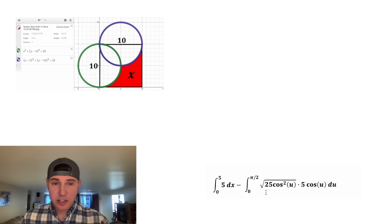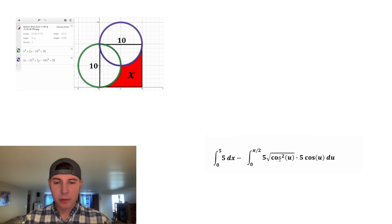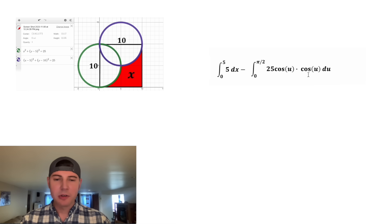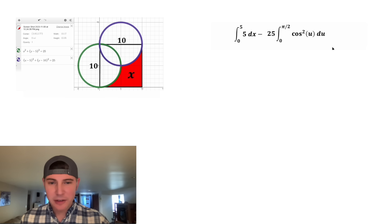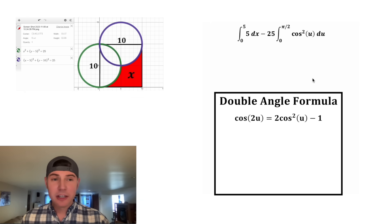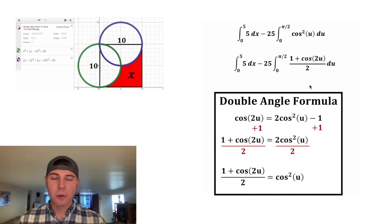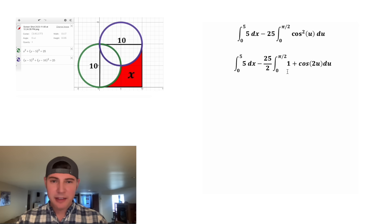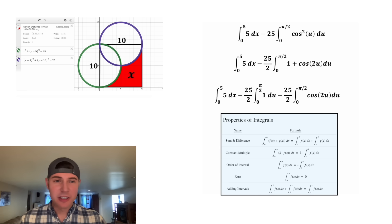Combining everything: the square root of 25 cosine squared u splits into two square roots — the square root of 25 is 5, and the square root of cosine squared is cosine — giving us 5 cosine u. Multiplying 5 times 5 gives 25, and cosine u times cosine u gives cosine squared u. This 25 is a multiplicative constant we can pull out. Using the double angle formula, we rewrite cosine squared u as (1 plus cosine 2u) over 2, pulling out the 1/2 and splitting into two separate integrals.